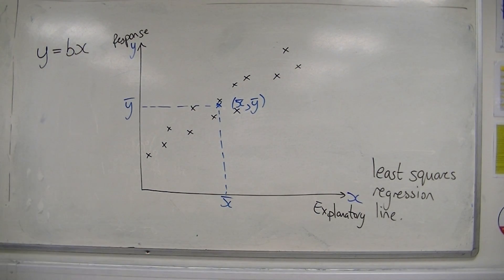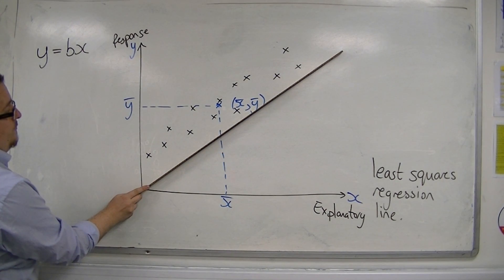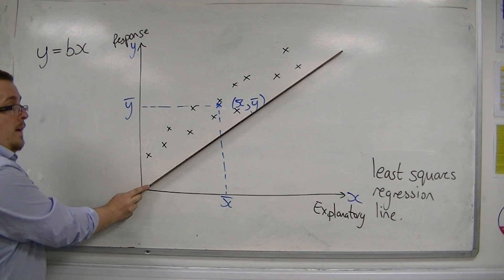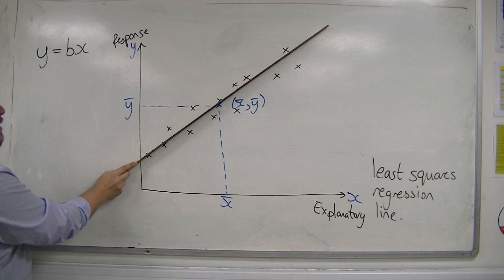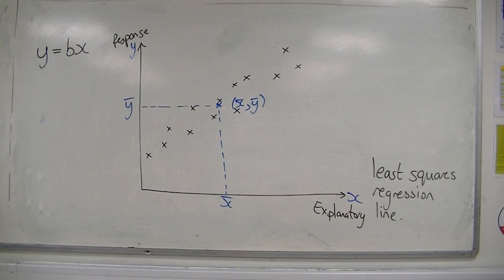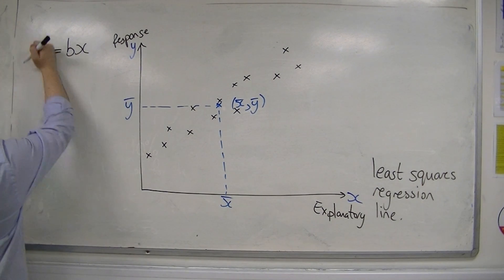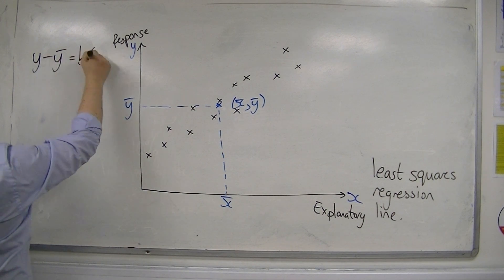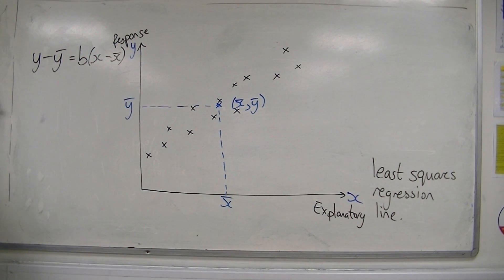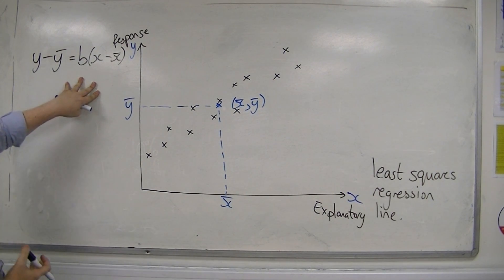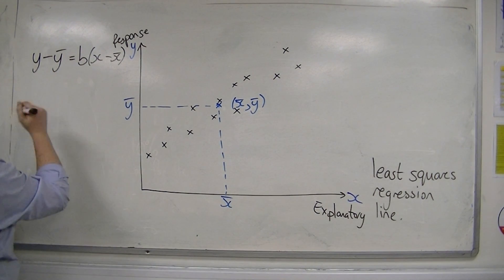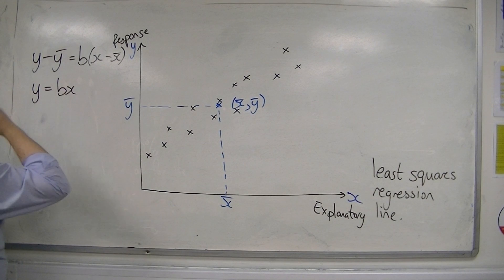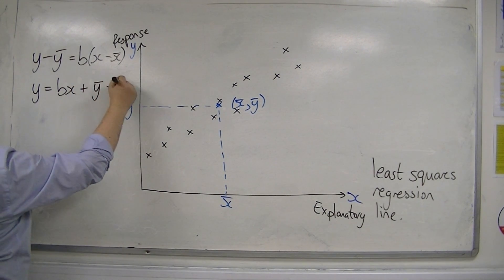That would be this line here. It's going in the same direction, but it's not currently going through x-bar, y-bar. So I need to translate it so that it goes through the point x-bar, y-bar. In order to do that, I replace y with y minus y-bar, and I replace x with x minus x-bar. If I reorganise this, then we have y is equal to bx — multiplying this bracket out — plus y-bar minus bx-bar.